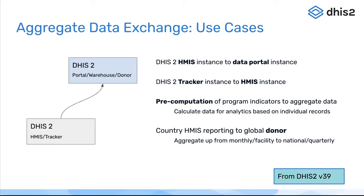There are many other use cases for this. Public data access is another one, where you want to send and review only the specific data that gets sent to a separate DHIS2 instance — particularly for public data access, for security and privacy concerns. That is possible with this functionality as well. The value of pre-computing program indicators and sending those into the aggregate data model is quite powerful.